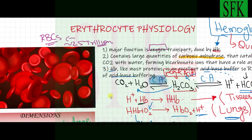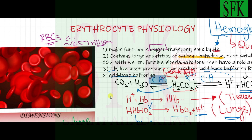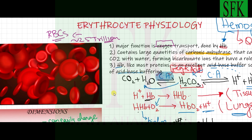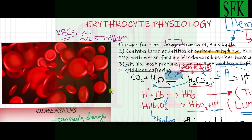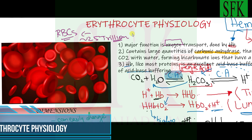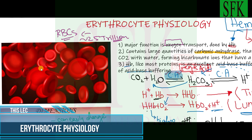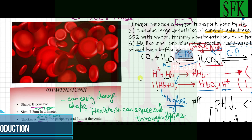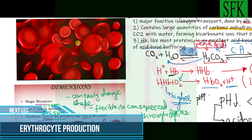In this lecture we are going to talk about erythrocyte physiology. Erythrocytes are the most abundant cells present in your body — they are the red blood cells. They are present in the blood, around 25 trillion in your body, roaming around in your five liters of blood.